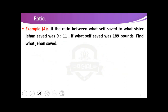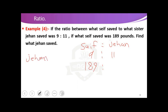The last exercise. If the ratio between what Saif saved and what his sister Jehan saved was 9 to 11, and what Saif saved was 189 pounds, find what Jehan saved. The ratio between Saif and Jehan is 9 to 11, and Saif saved 189 pounds. So we multiply 11 by 189 and divide by 9. 11 multiplied by 189 divided by 9 equals 231 pounds. So Jehan saved 231 pounds.